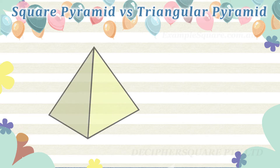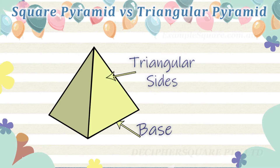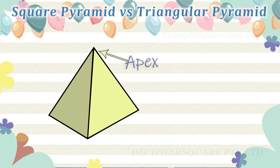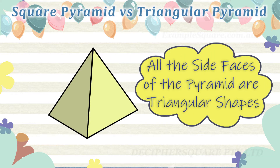A pyramid is a three-dimensional shape with a single polygon shape base and flat triangular sloping sides that meet at the common top point called the apex. All the side faces of the pyramids are triangles.